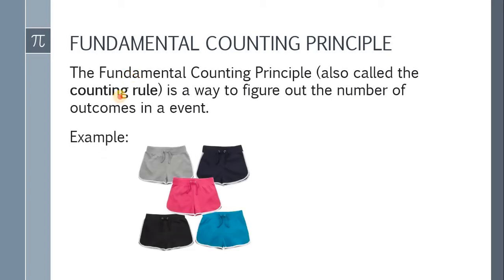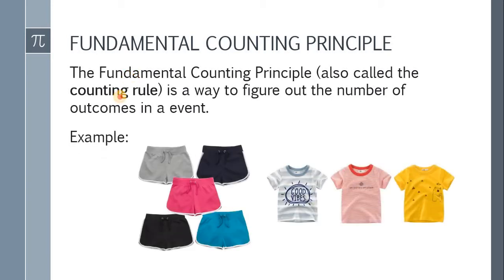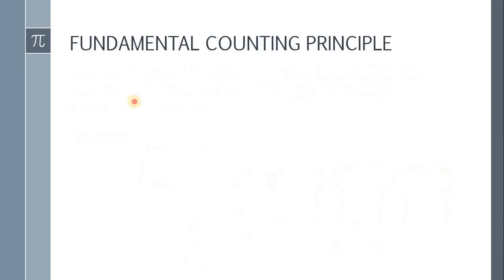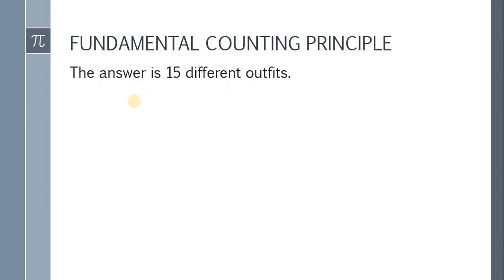So let's say for example, you have 5 shorts and 3 shirts. Now the question is, how many different outfits can you make? Pause for a moment and think. The answer is 15 different outfits. Now how did it become 15?